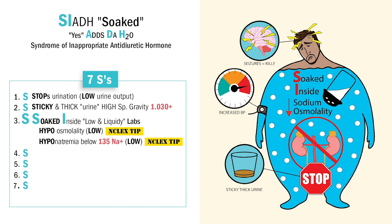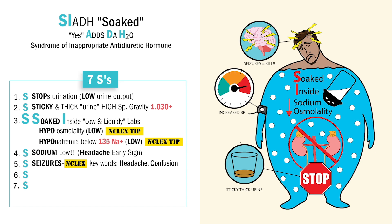Next S is again an NCLEX favorite — sodium that is low. Swelling in the brain with cerebral edema, seizures, and death. Often the earliest signs — big NCLEX keywords here — are headache, but also confusion and agitation. Next S is again for seizures from that low sodium, so we set up seizure precautions for SIADH. Huge priority.